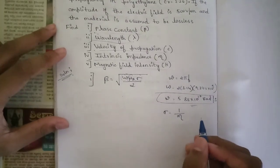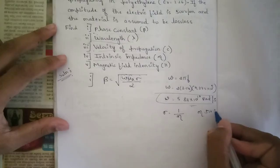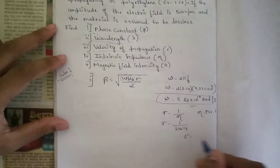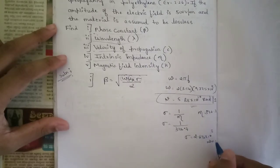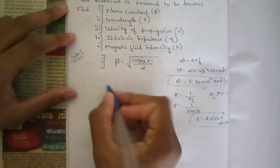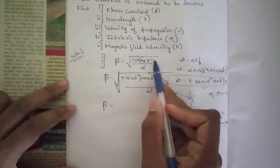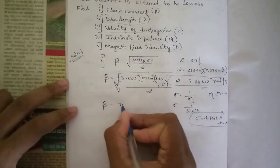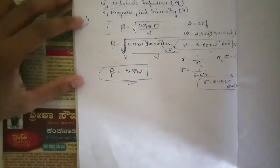In free space, η = 376.7 Ω, so σ = 1/376.7 ≈ 2.65×10⁻³ mho/m. Substituting the values of ω, σ, and μ₀ into the phase constant equation and simplifying the square root, the answer for β is approximately 9.892.